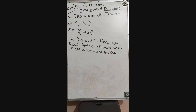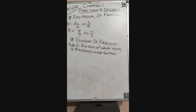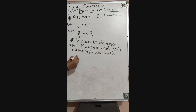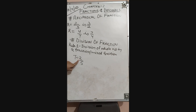What we have to do to divide a whole number by any fraction: we have to multiply that whole number by the reciprocal of that fraction. For example, if I write 7 divided by 2 upon 5 — this is a whole number and this is the fraction.